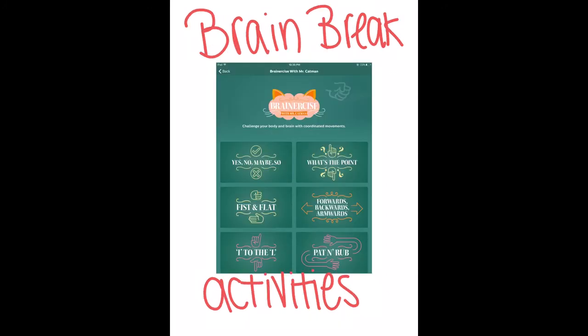I believe brain break activities are really important in the classroom. This is a category on GoNoodle called Brainer Size with Mr. Catman. These are really perfect for younger elementary students. There are different categories you can click on such as Forward, Backwards, Armwards, Pat and Rub, and I to the L. These are really fun — they challenge your body and brain with coordinated movements.